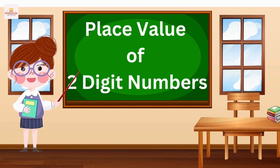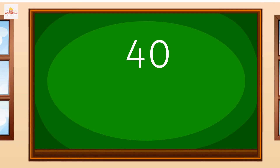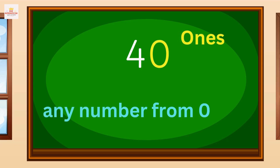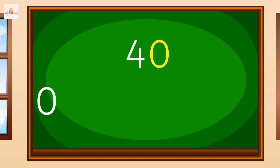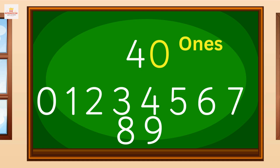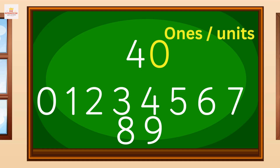You see the number 40 on the screen. The number on the right side stands for ones — it can be any number from zero, one, two, three, four, five, six, seven, eight, or nine. The ones place is also called the units place, and it is always the rightmost number.